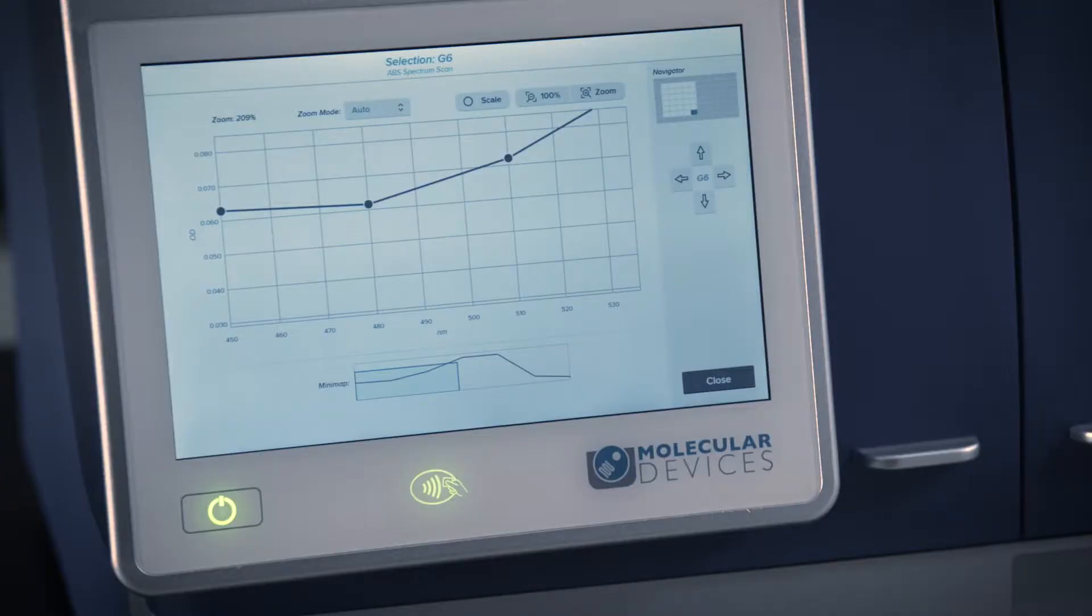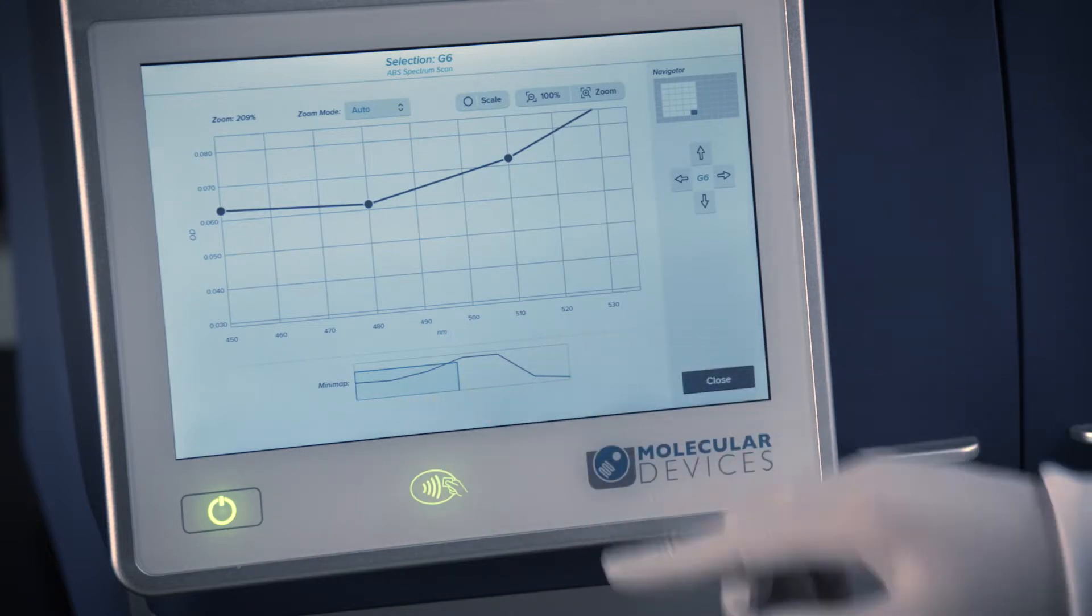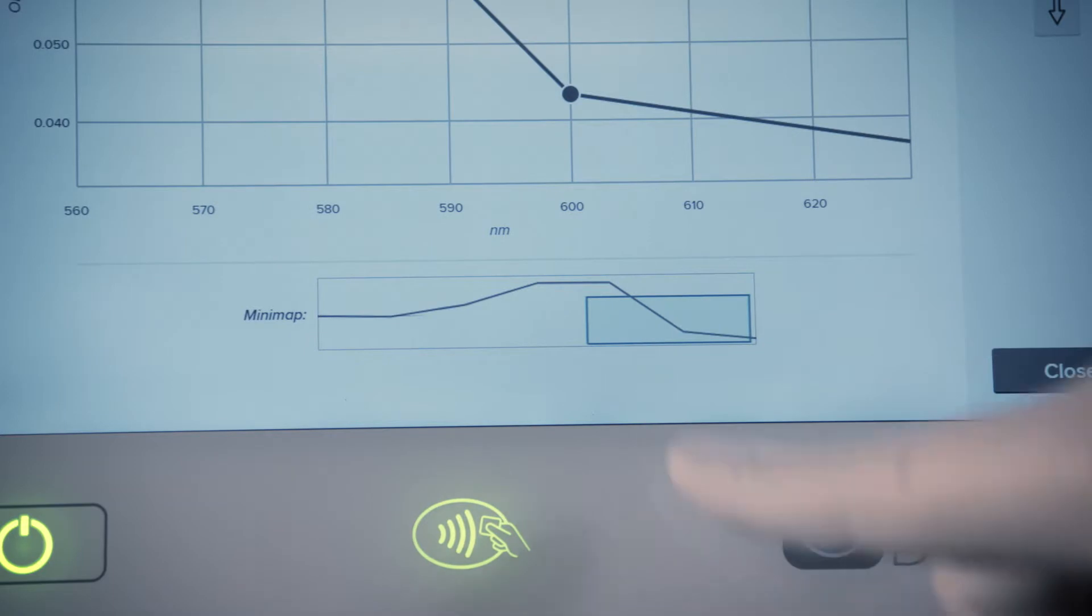You may also use the zoom and scale features located at the top of the graph. When zoomed in, the mini-map will show the section of the graph you're looking at. The mini-map can also be used to navigate quickly to different sections of the graph.